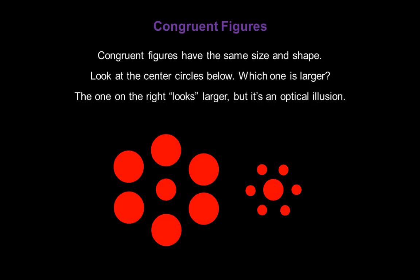I'll draw a blue circle on top of the center circle at left and slide it over to the one on the right. They match exactly, so they're both the same size. The two center circles are said to be congruent.